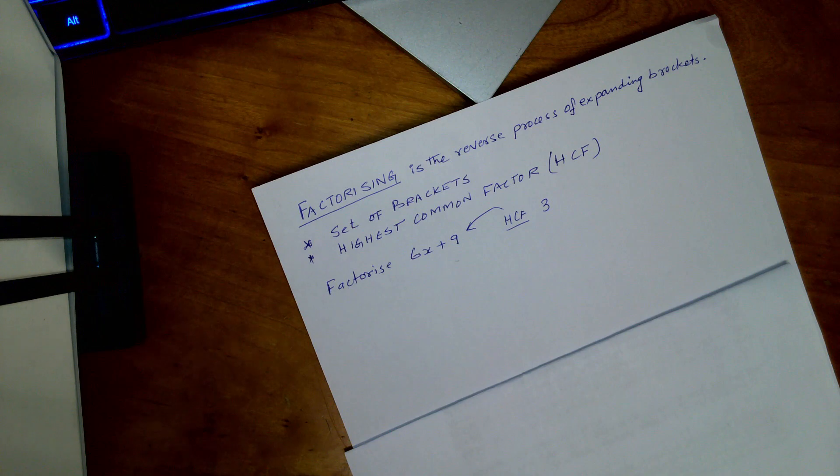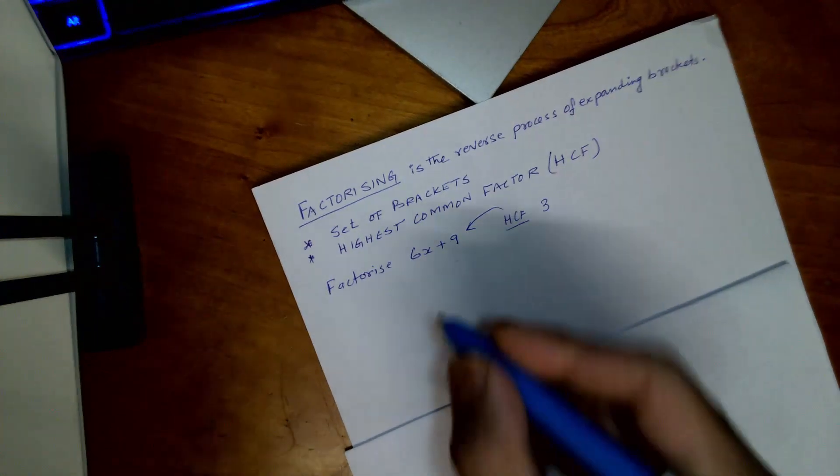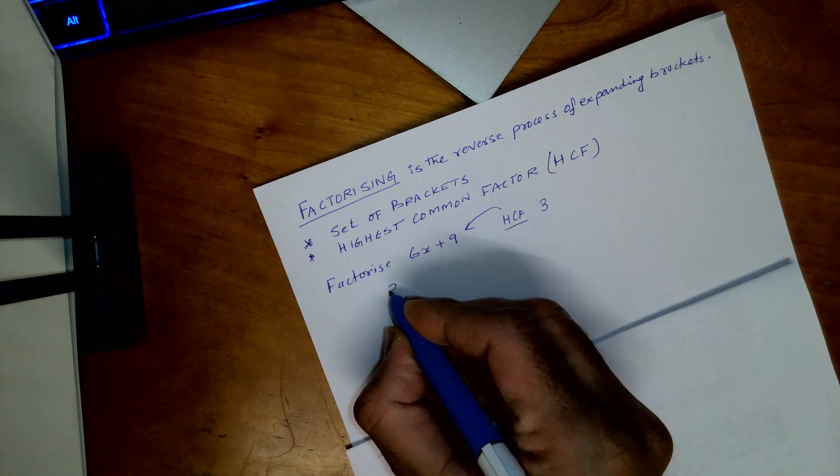So to factorize, we write down the HCF and then begin a set of brackets. Then you find the missing terms in the brackets by dividing each of the terms given in the question by the HCF.